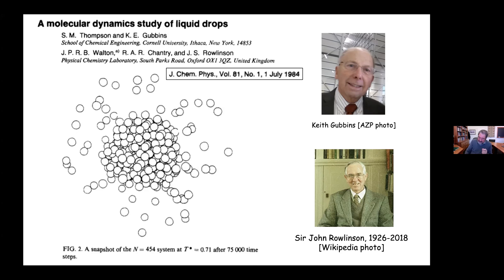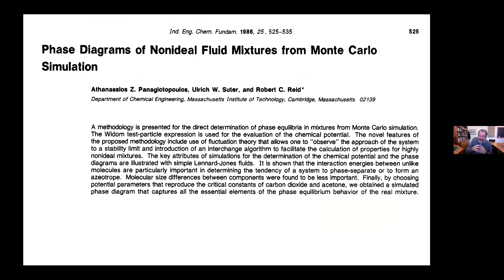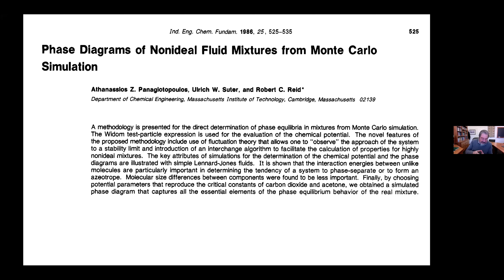What I did in my PhD is a very laborious and time-consuming set of calculations using a method called Widom test particle insertion — taking a particle and inserting it randomly in a fluid to get the chemical potential as a function of composition and density of the mixture. This was published in 1986, the last half of my PhD, in collaboration with Ulrich Suter, a relatively young faculty member at MIT at the time. Also Robert C. Reed, Bob Reed, my advisor at MIT. That work got me my faculty position at Cornell.